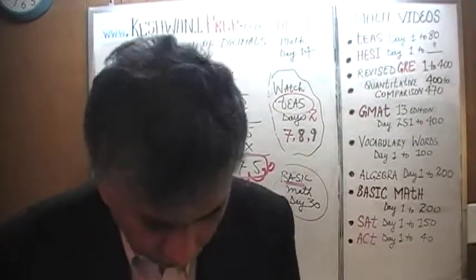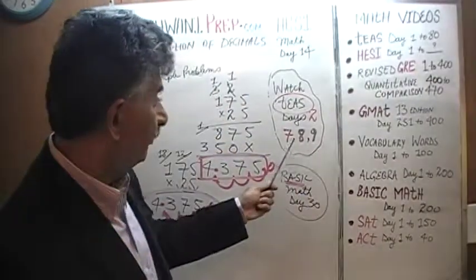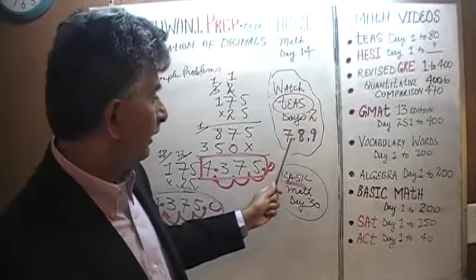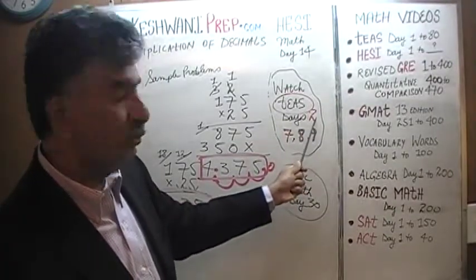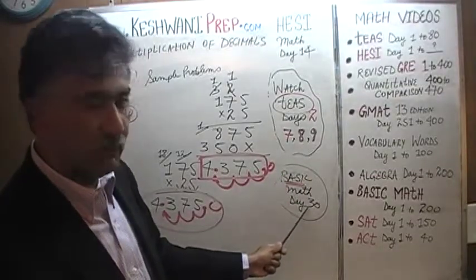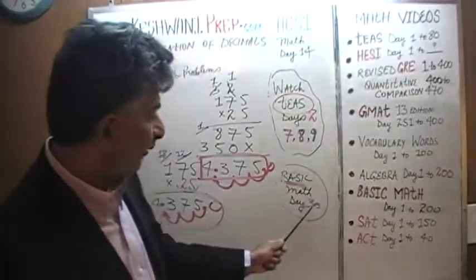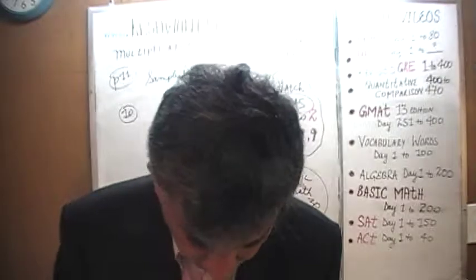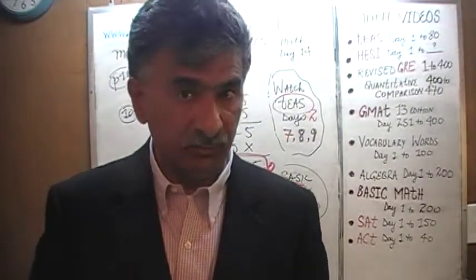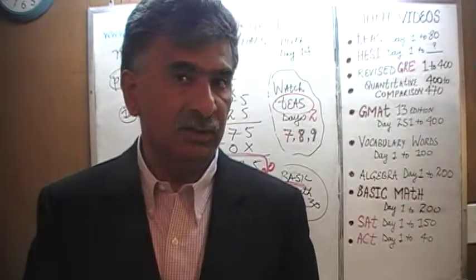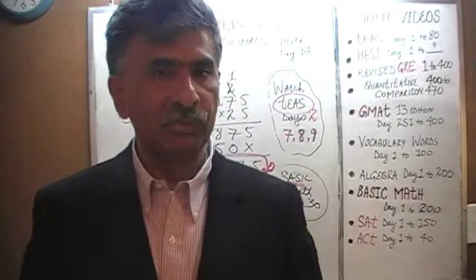That was the end of the topic of multiplication of decimals. If you need more practice, watch T's math day 8, 9, and 10 for multiplication of decimals; day 2 for squares; and basic math day 30 for more problems. We are done with decimals. Next we are going to move on to division of decimals, which scares the hell out of most people — but don't worry, we have a trick, an ace up our sleeve. I will show you the ace tomorrow. Bye now.